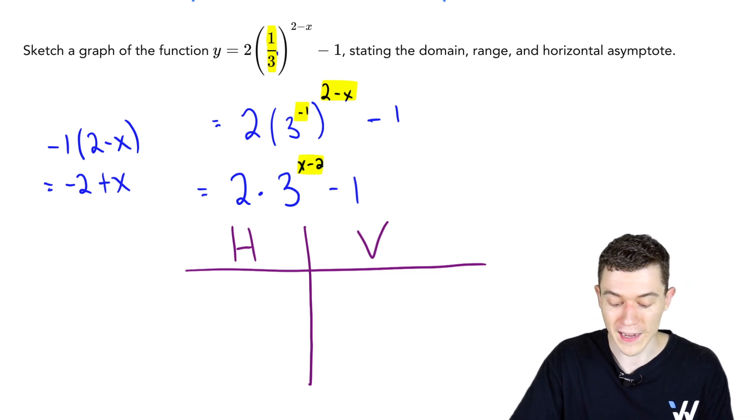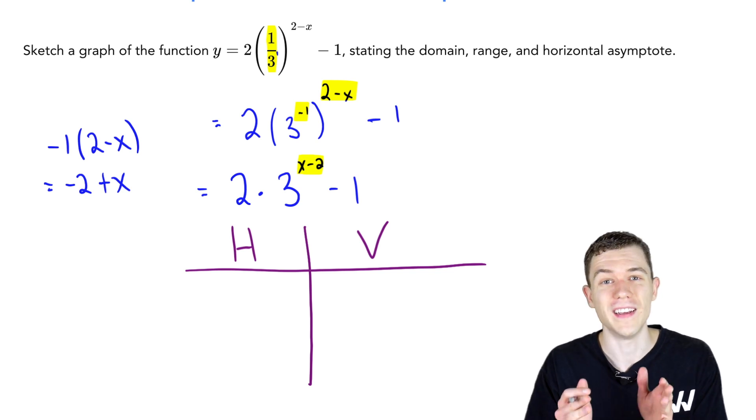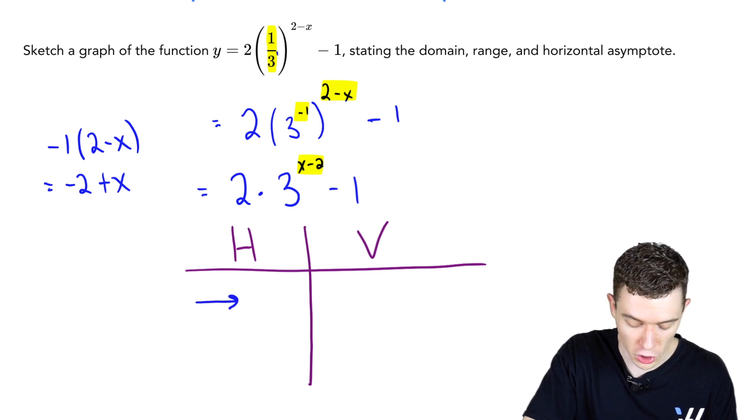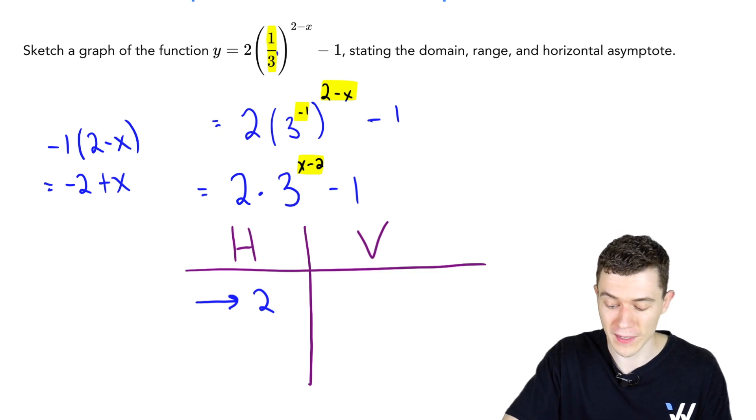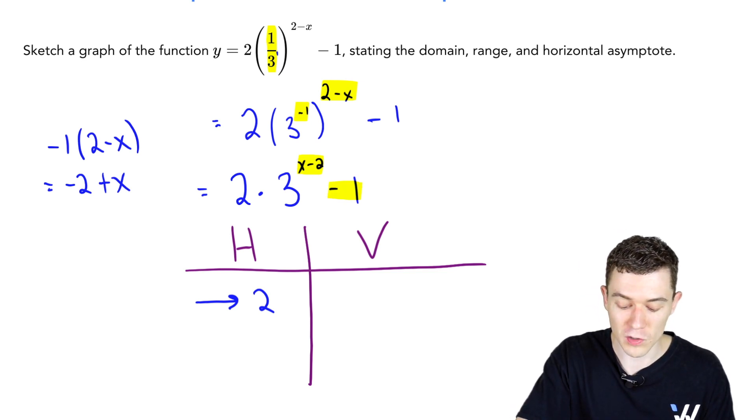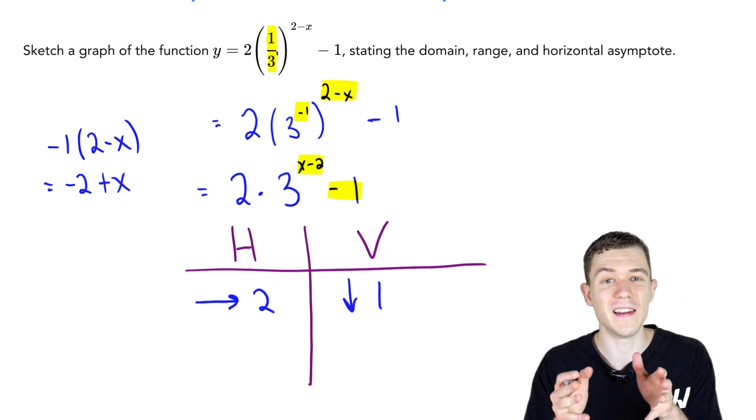It shifts to the right two units. The vertical transformations happen on the outside. That minus one, that's a vertical shift down one unit, and I also like to say that that number out back clues us into the horizontal asymptote.